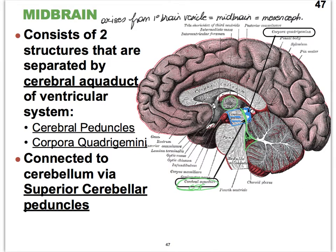By the way, the midbrain is connected to the cerebellum via structures full of fibers called the superior cerebellar peduncles. Now, notice that we have cerebral peduncles to discuss, and there are cerebellar peduncles — be careful on exams. When you read too fast, make sure that you can distinguish between the terms cerebral and cerebellar. Big difference there.